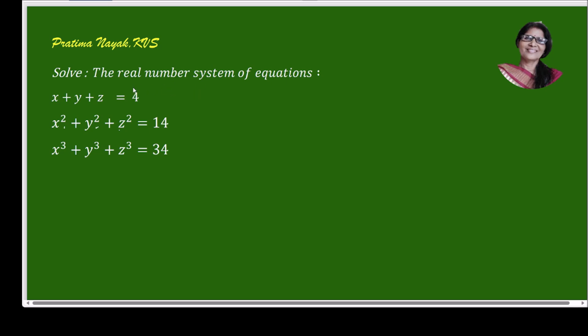The question is: solve the real number system of equations x + y + z = 4, x² + y² + z² = 14, and x³ + y³ + z³ = 34.